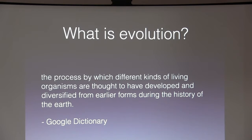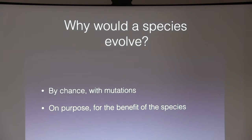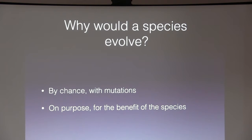So apart from what evolution is, why would a species evolve in the first place? There are three factors. First, it could be by chance — their DNA mutates and they become an evolved species. Or it could be on purpose, for the benefit of that species. The evolved species have a new trait that helps them live in the wild, and it's these traits that help them survive. The ones who survive continue passing on their genes, and those will be the only remaining species.